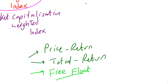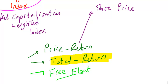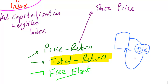A price return index is purely to do with the share price — we don't take anything else into account. With a total return index, the shares will be generating dividends. What we do with a total return index is assume that those dividends get reinvested back into buying more shares in that company and back into the index. We typically use the share prices on the ex-dividend date. So a total return index will generally be greater than or equal to a price return index.